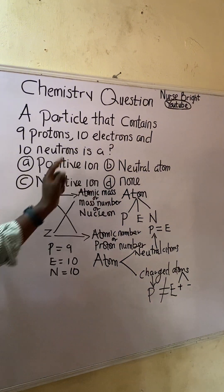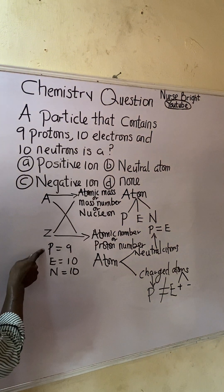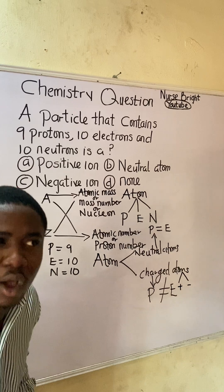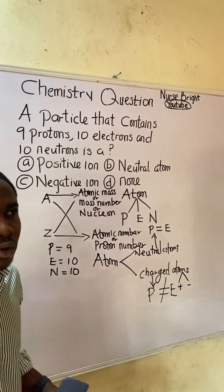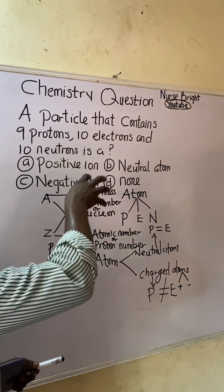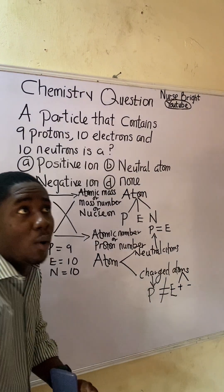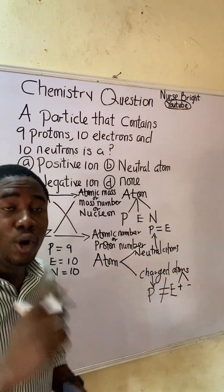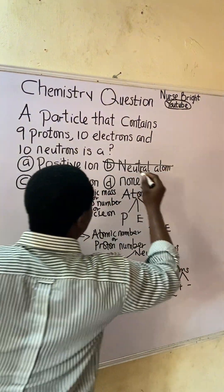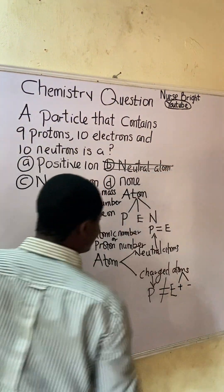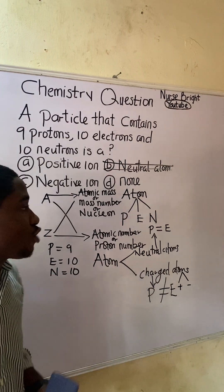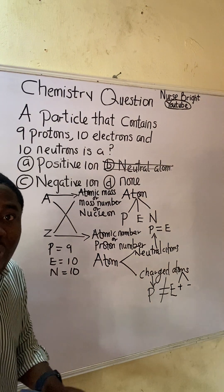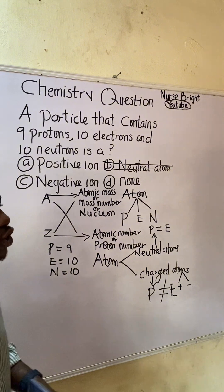Looking at the information given: proton number is nine, electron number is ten — are they equal? No. So this is definitely a charged atom. Option B is already out because it cannot be a neutral atom. For a neutral atom, proton and electron numbers must be the same.